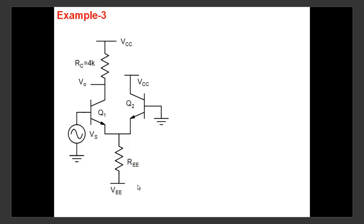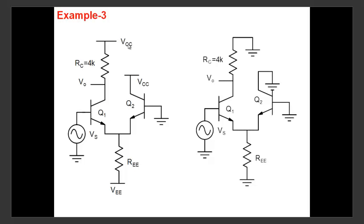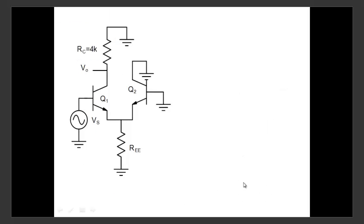So let's apply the method. We're looking for V0/Vs. First step: draw the small signal circuit — remove VCC so it becomes ground, remove all capacitors, and lay out the small signal equivalent. Don't replace the transistors by hybrid-pi yet. Just draw the simplified circuit with all DC sources removed.